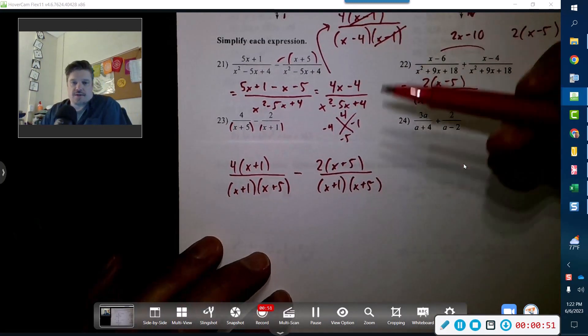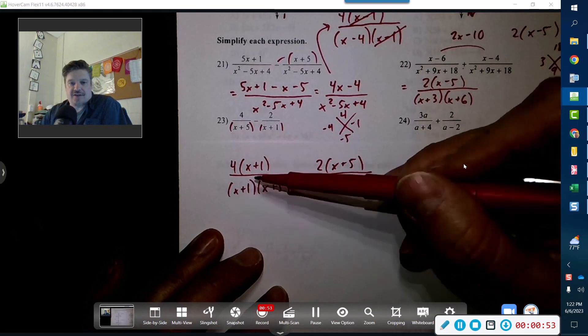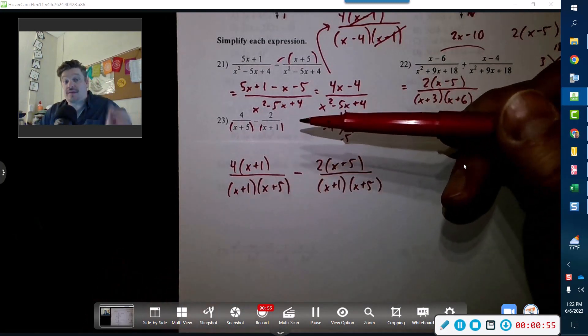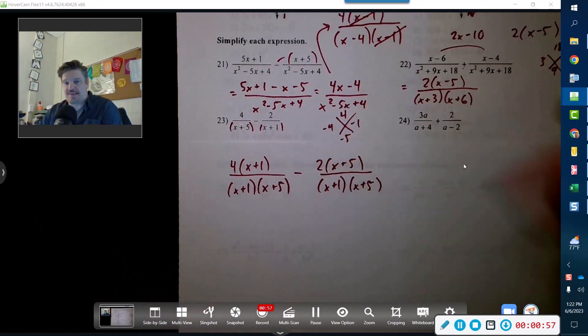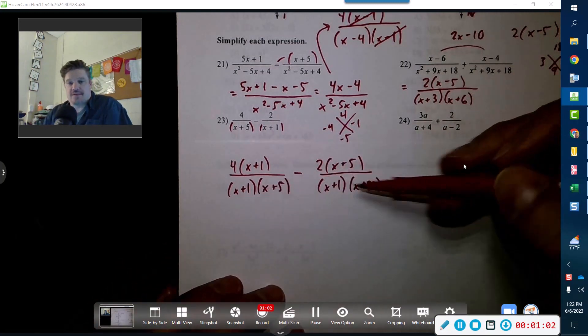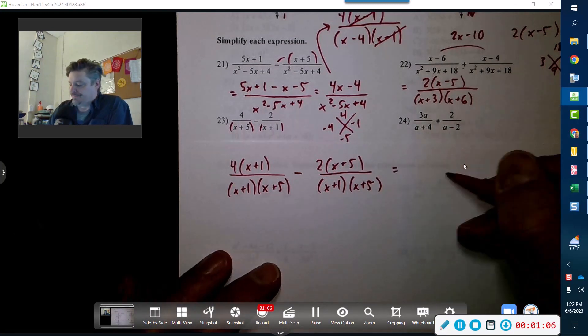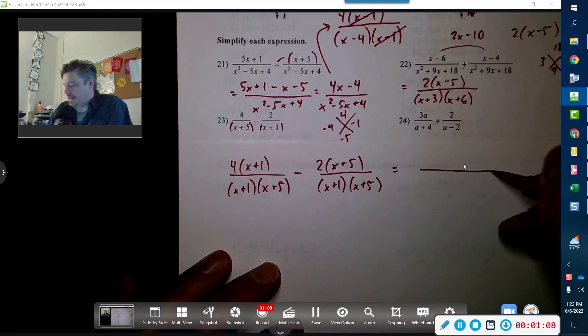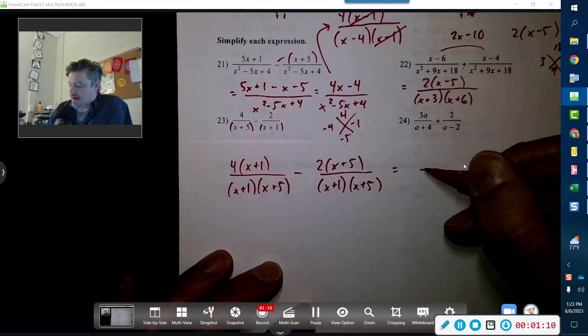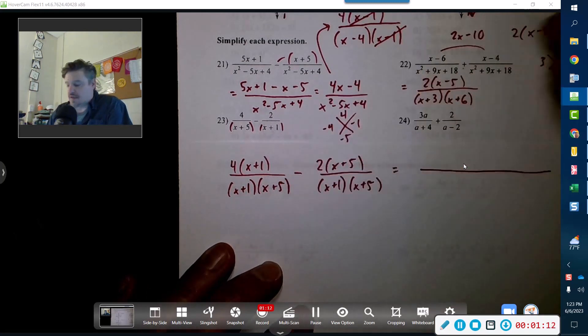Now notice what we did there. It's a trick, right? Because these guys actually cancel out, but we don't want them to cancel out. We put them there on purpose so that we can merge the two fractions together. Without the similarities we cannot merge these fractions.